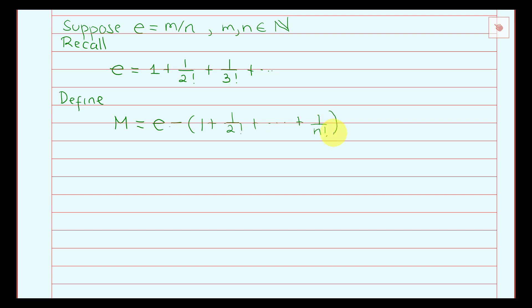So that is our m. Basically, m is the sum of the series starting from 1 over n plus 1 factorial onward. Note that...